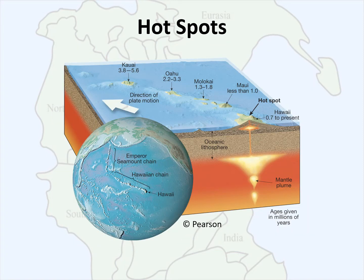This image illustrates the motion of the Pacific plate over the Hawaiian hot spot, generating each of the islands over a span of 6 million years. The mantle plume is constant and fixed, while the overlying Pacific plate is moving across that plume. Each time it does, it generates a new set of volcanoes and a new set of islands along with that motion.